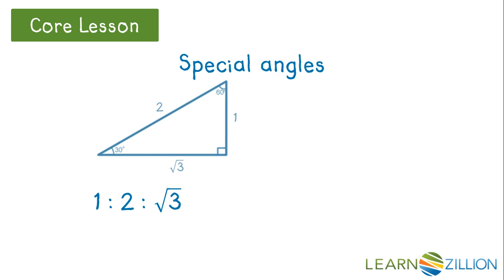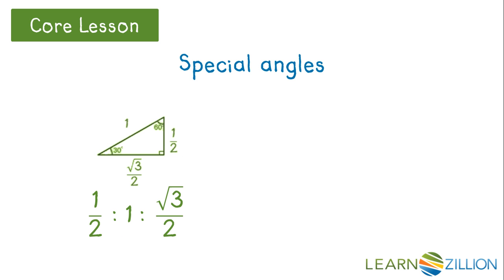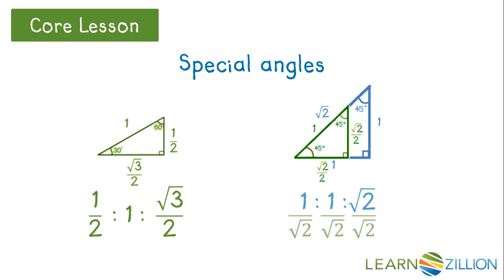Now let's take another look at the special triangles. Because we are interested in the unit circle where r is equal to 1, we want the hypotenuse of our triangles to be 1. So let's make similar triangles by dividing the 30, 60, 90 by 2 to get the ratio 1 half, 1, radical 3 over 2. For the 45, 45, 90 triangle, we'll divide by radical 2. After we simplify, we get radical 2 over 2, radical 2 over 2, 1.